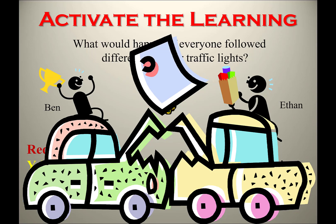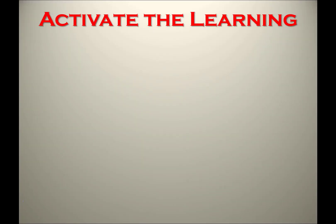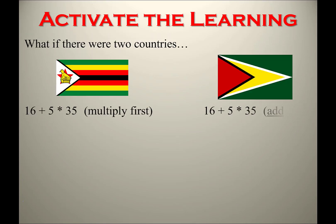We have rules in life so that we all follow the same set of standards to get the same results — basically a common understanding of how we function as a society. Here's another example: what if two countries each calculate a bill differently? Let's say country A wants to buy chocolate from country C, and when they get the bill, each country calculates the total in a different way.